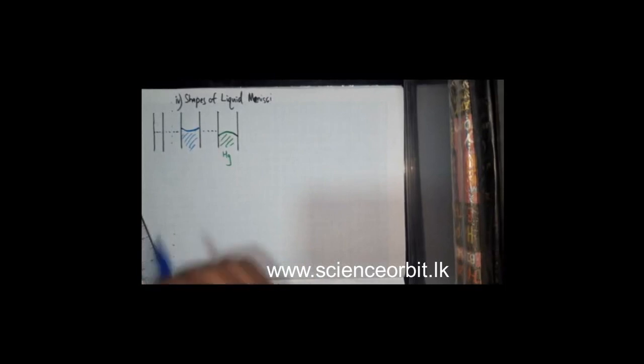The next is mercury. When you compare mercury, the meniscus of mercury is going to look a little different. Mercury was supposed to be at this level, but mercury will look like this. So this is mercury (Hg) and this is water (H₂O).